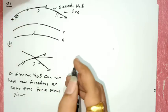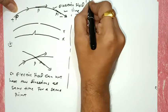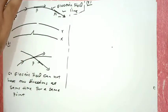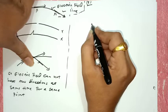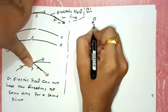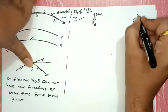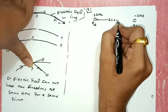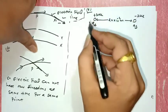Let's start with Numerical 8. Two point charges QA = +3 micro coulomb and QB = -3 micro coulomb are located 20 cm apart in vacuum. Converting 20 cm to SI units: 20 × 10⁻² meters. The whole system is in air or vacuum.